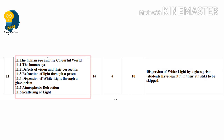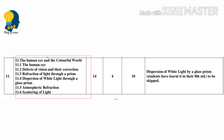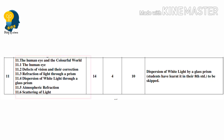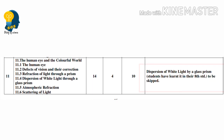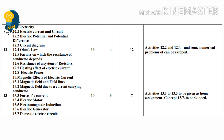Next lesson — The Human Eye and the Colorful World. Important concepts: The Human Eye, Defects of Vision and their Correction, Refraction of Light through a Prism, Dispersion of White Light through a Glass Prism, Atmospheric Refraction, and Scattering of Light. Skip the concept: Dispersion of White Light by a Glass Prism.